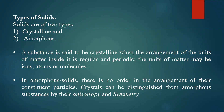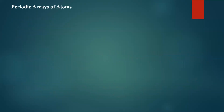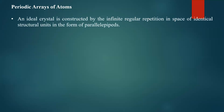In crystals, atoms are arranged in periodic arrays. An array is a group of structural units — nothing but atoms or groups of molecules. An ideal crystal is constructed by infinite regular repetition in space of identical structural units in the form of parallelepipeds. For a three-dimensional structure, consider a large number of identical boxes arranged beside and above one another.